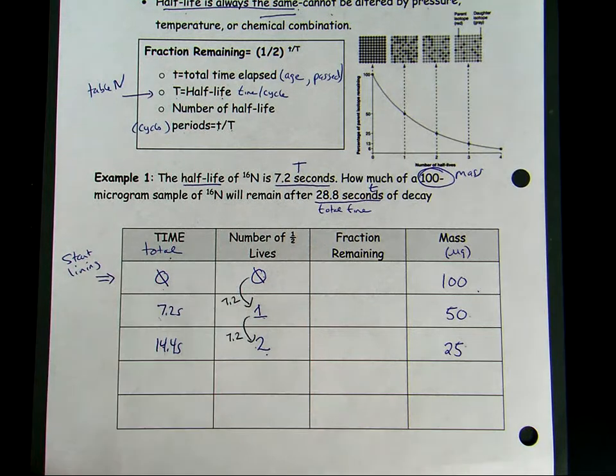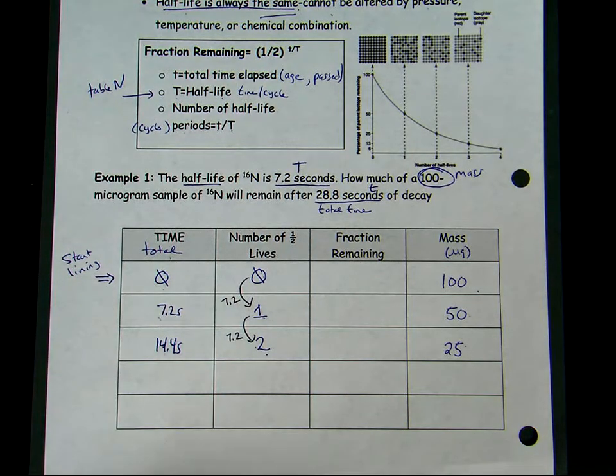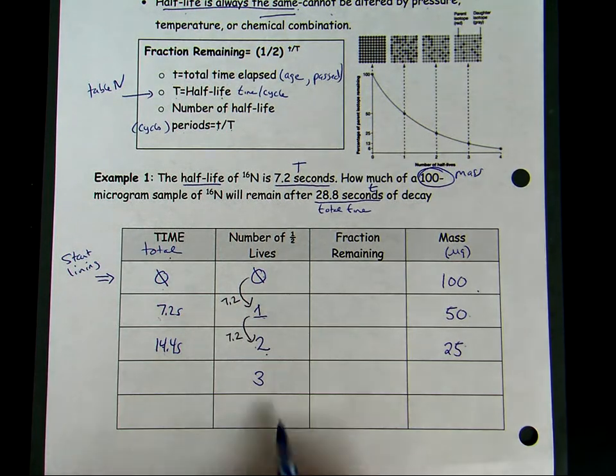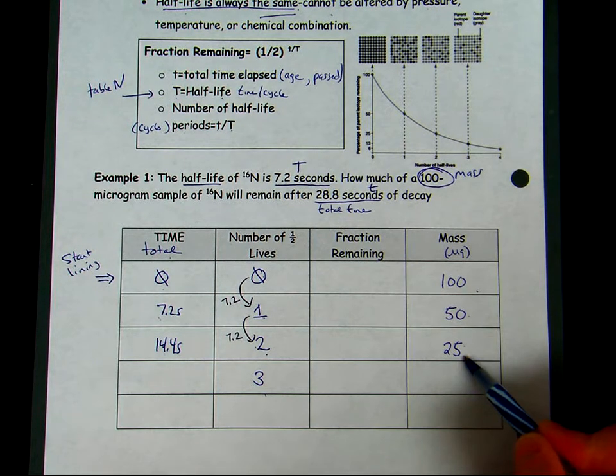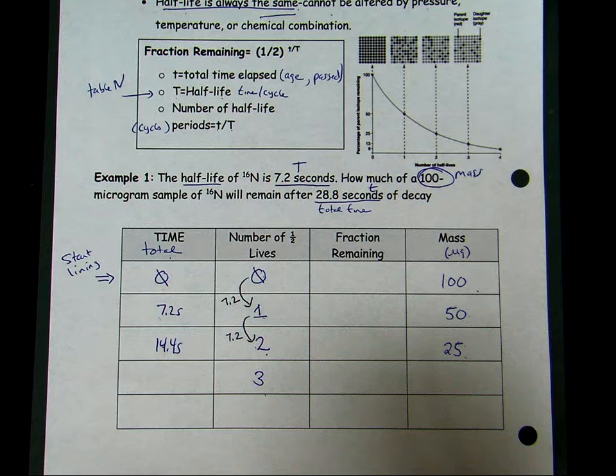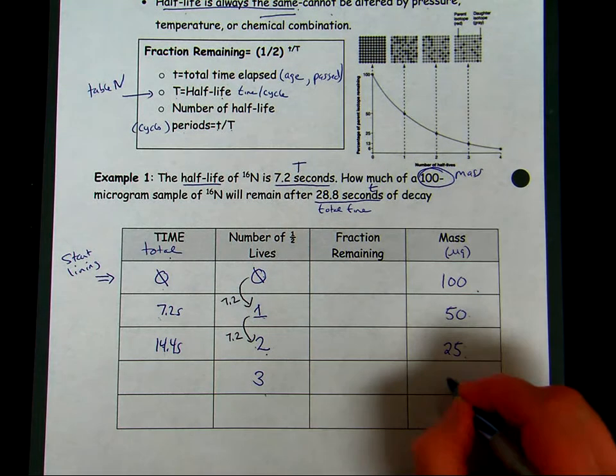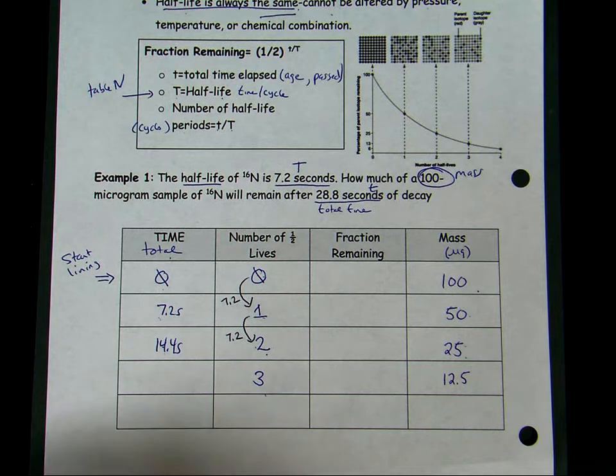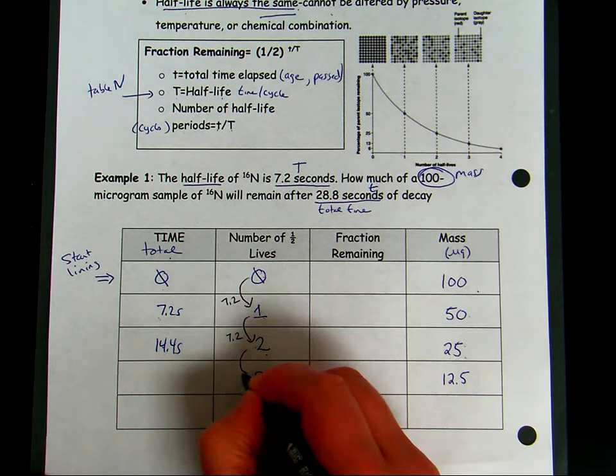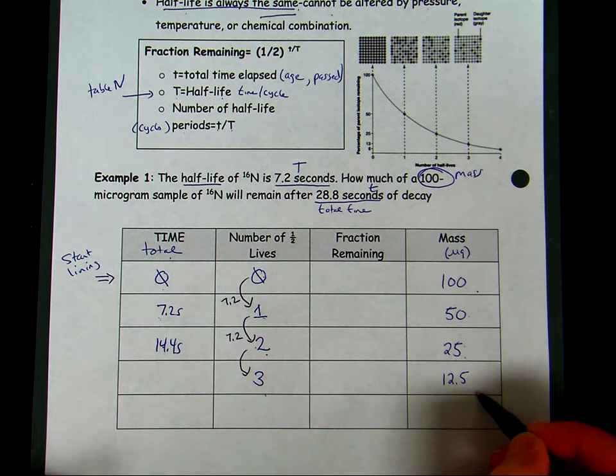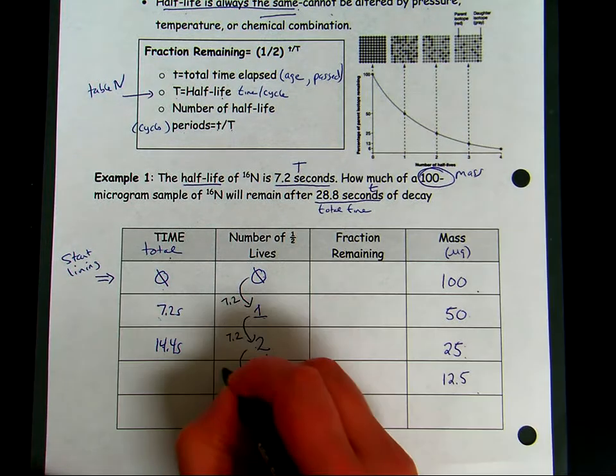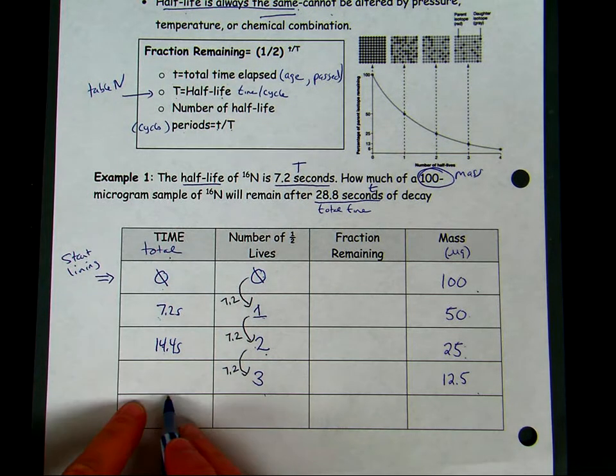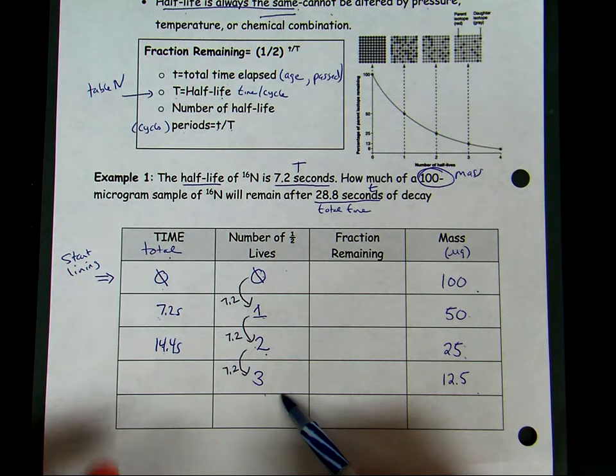Eventually our sample will go through a third cycle. At the end of the third cycle, there's no longer 25 micrograms left. Now it's decayed down to 12.5 micrograms. For the sample to decay from 25 to 12.5 micrograms, it required another 7.2 cycles, so now the total time from zero all the way to three cycles is 21.6 seconds.